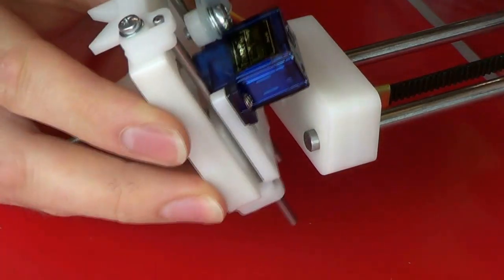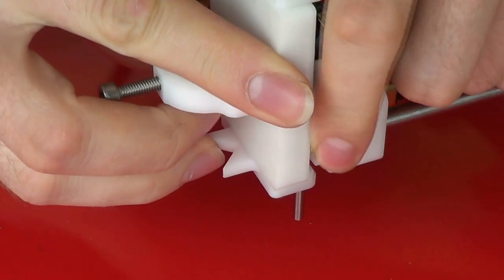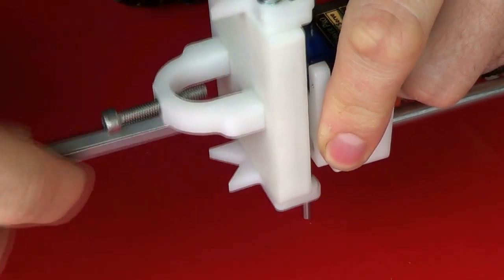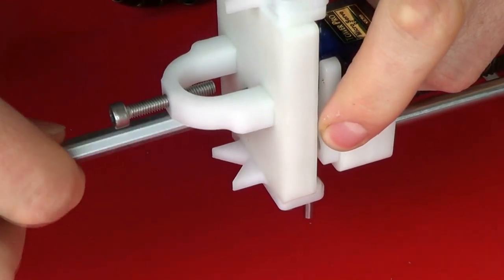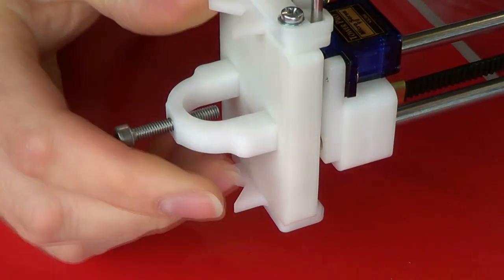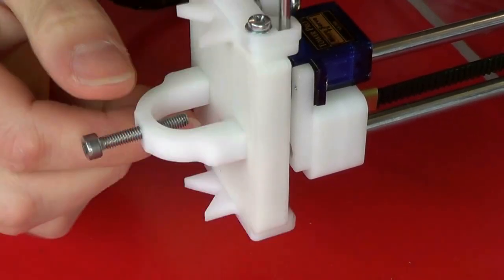So make sure the ends locate over the Y-rails, and then using the PosiDriver number 2 screwdriver, tighten it up and check the travel of the pen slide.